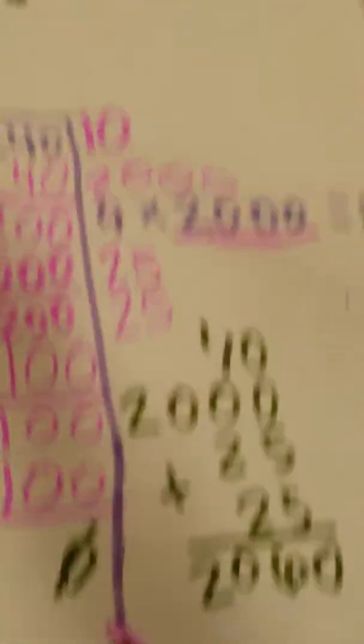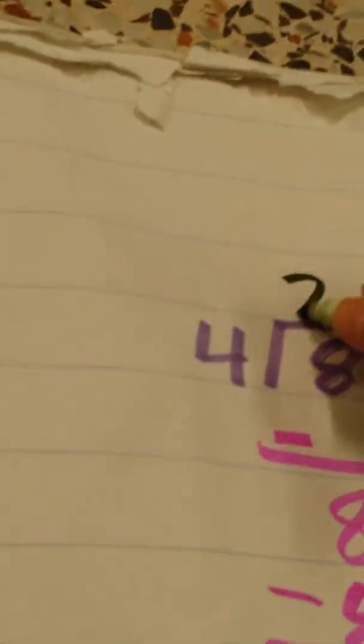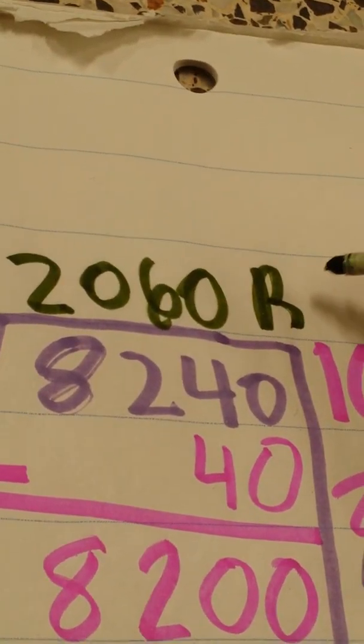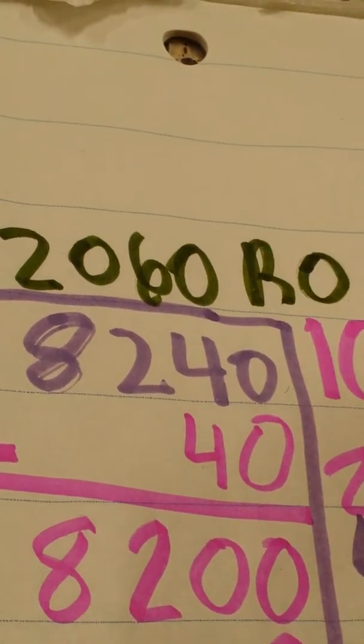So you write the question up here, right here, or you write the answer. Yeah, the right answer. So our answer would be 2,060. But if we did have a remainder, this is how you would write it. Rema... R and then whatever it is. But you don't have to do R,0, but you can. Okay.